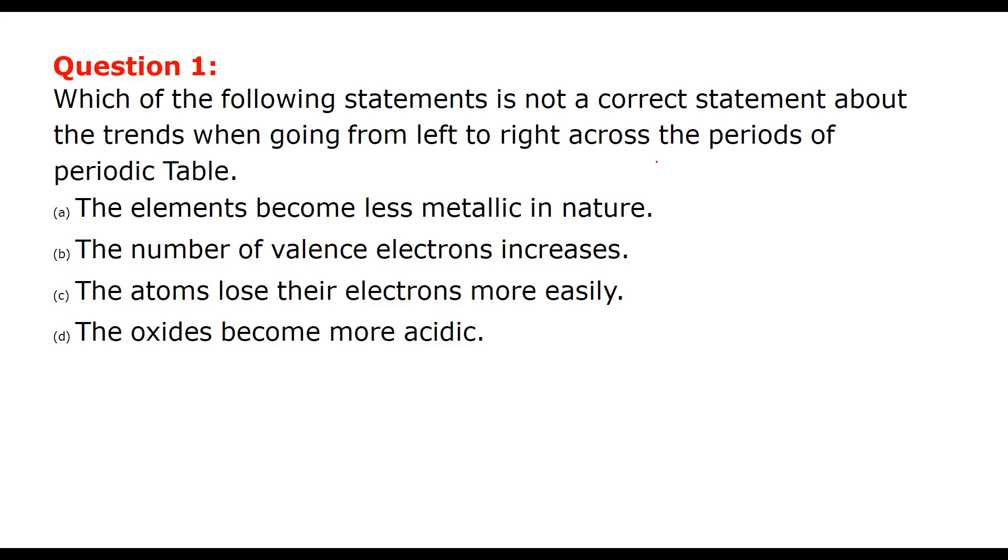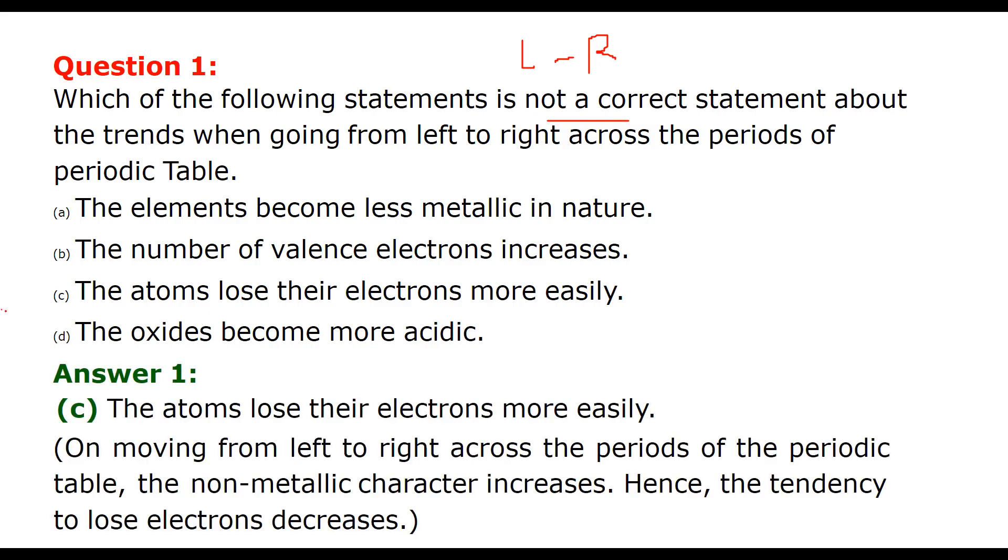Now let us start the question: which of the following statement is not a correct statement about the trends when going from left to right across the periods of periodic table? The answer is C. The atoms lose their electrons more easily. This is incorrect. Because on moving from left to right across the periods of the periodic table, the non-metallic character increases, so the tendency to lose electrons actually decreases.